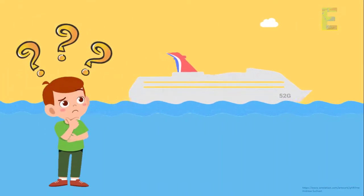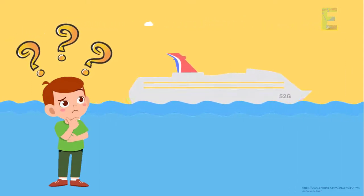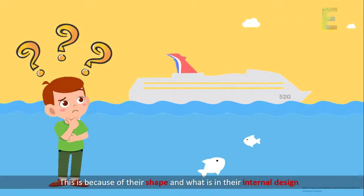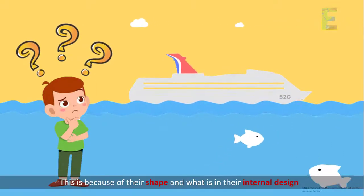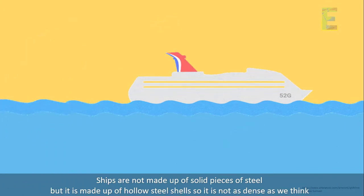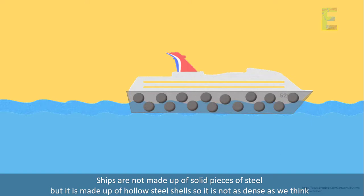Then, why do steel ships float when they are definitely made up of metal which is very dense materials? This is because of their shape and what is in its internal design. Ships are not made up of solid pieces of steel, but it is made up of hollow steel shells, so it is not as dense as we think.